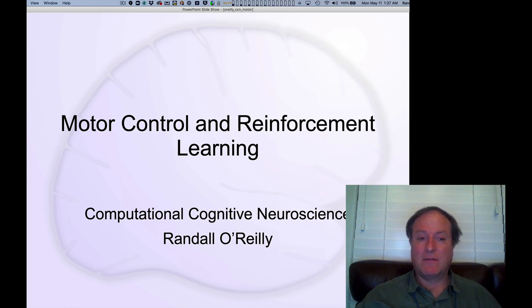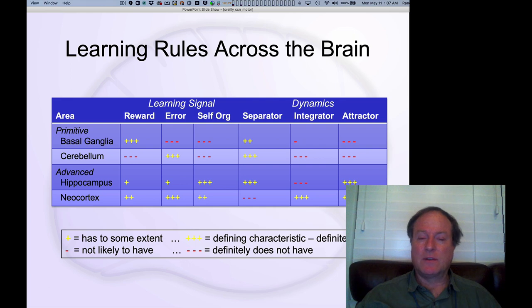Okay, we're now starting chapter 7 on motor control and reinforcement learning. We'll start, as usual, with an overview of the biology. This was really covered a lot in the brain areas chapter, chapter 5. So we'll go relatively quickly through here, and you can look back at those lecture slides for more details.